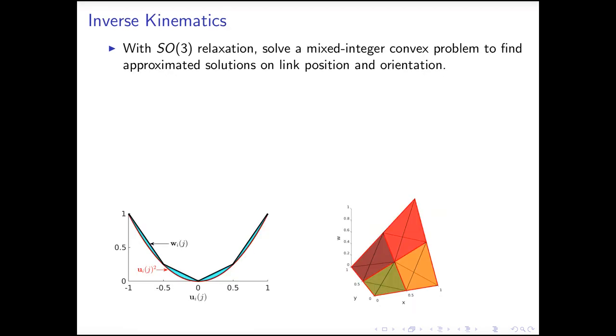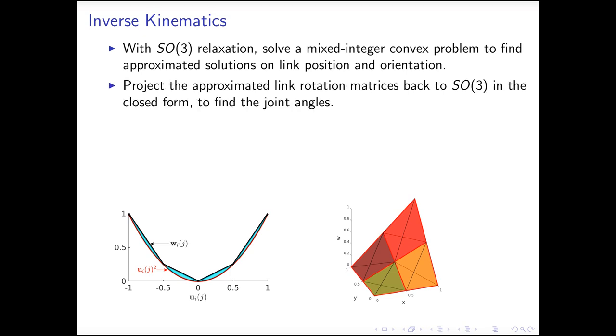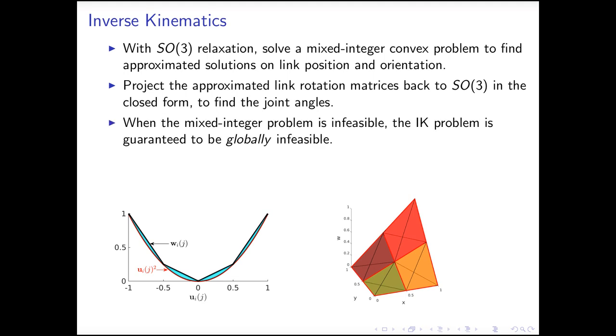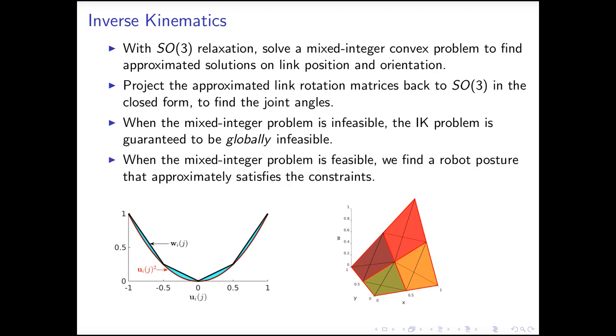Here, I quickly summarize our IK algorithm. With our SO(3) relaxation, we can solve a mixed integer convex optimization problem, to find approximate solutions to link position and orientation. We then project the approximate link rotation matrices back to SO(3) in closed form, to find the joint angles. There are two possible outcomes when solving the mixed integer convex problem. If the optimization is infeasible, then we prove that the IK problem is globally infeasible. If the optimization is feasible, then we find solutions that approximately satisfy the kinematic constraints.